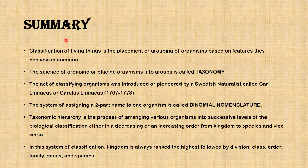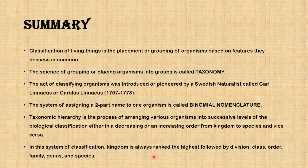We have come to the end of today's lesson. In summary: classification of living things is the placement or grouping of organisms based on features they possess in common. Taxonomy is the science of grouping organisms, pioneered by Carl Linnaeus who lived 1707 to 1778. The system of assigning a two-part name to an organism is called binomial nomenclature. The taxonomic hierarchy arranges organisms from kingdom to species — or species to kingdom — in decreasing or increasing order. In this system, kingdom is ranked highest, followed by division, class, order, family, genus, and species.